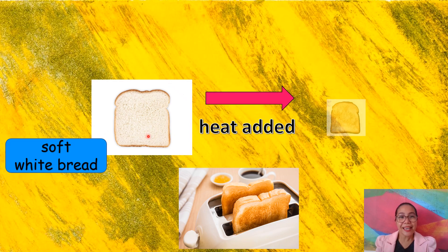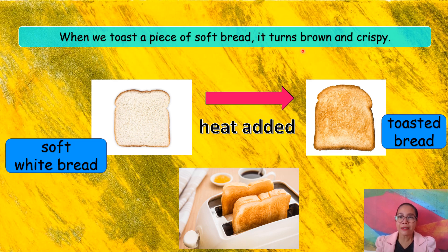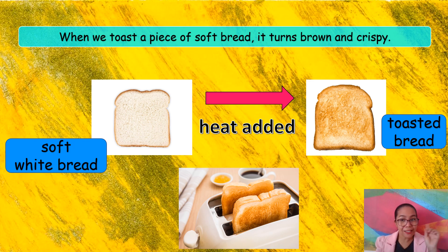This is a soft white bread. When you toast it or you put it in a toaster, heat is added. What will happen? It becomes a toasted bread. When we toast a piece of soft bread, it turns brown and crispy — a little hard. It's not soft anymore.